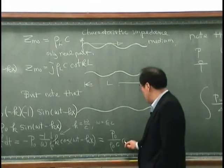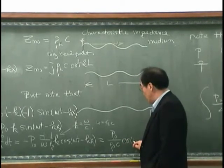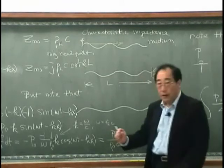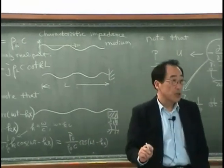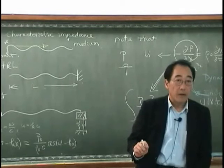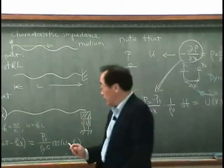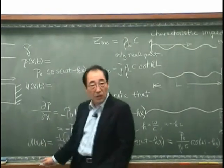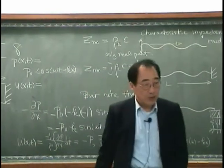And then I have cosine omega T minus Kx. That is velocity. It's very interesting, the pressure divided by this velocity is rho zero C.